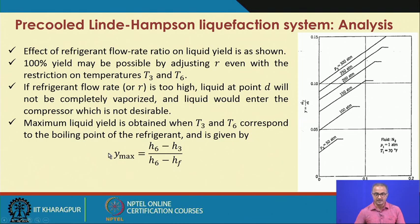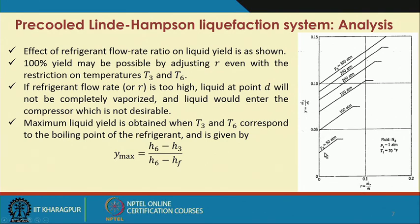If we plot the yield versus R for different pressures, we find that with an increase in R the yield increases. This is given for nitrogen at one atmosphere and 70 degrees Fahrenheit. This particular plot shows how the liquid yield is affected by the refrigerant mass flow ratio R.